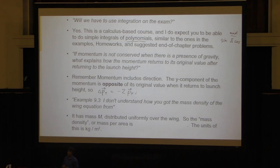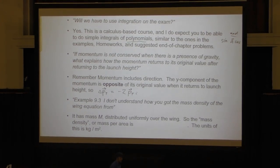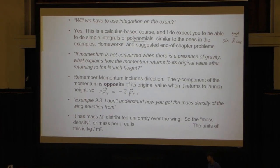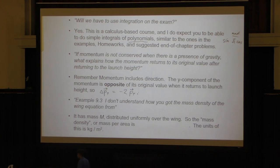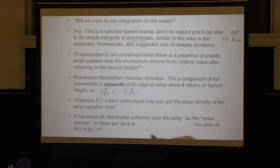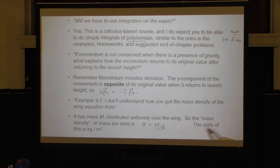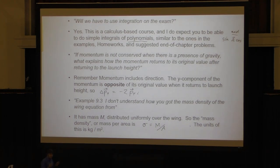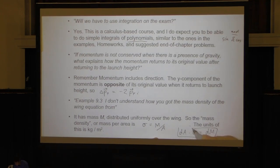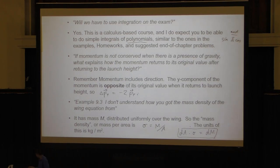Regarding the mass density in Example 9.3: the problem states that mass m is distributed uniformly over its area and that the wing is like a triangle. So you can define any letter you want — sometimes for mass density over an area you use the letter sigma — but it's going to be the total mass divided by the total area. Then if you have a little area dA, you can find its mass by multiplying by sigma: dA times sigma equals the little dm. I'll scan and post all these pieces of paper.